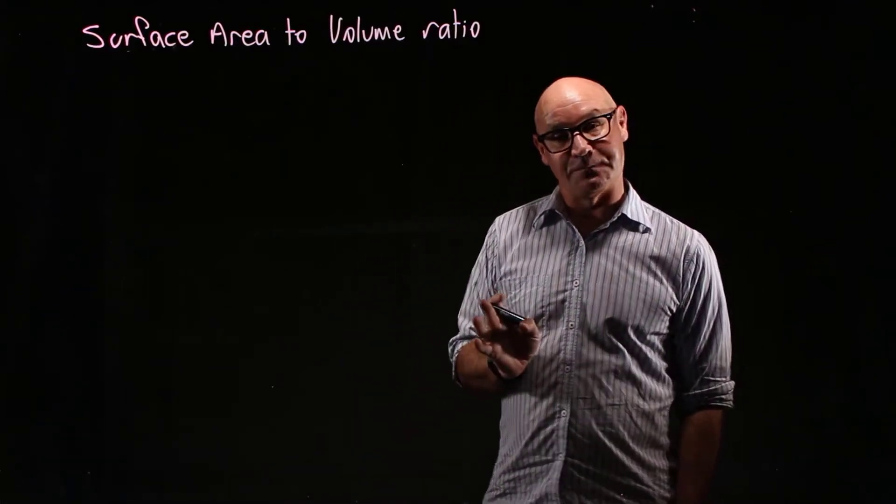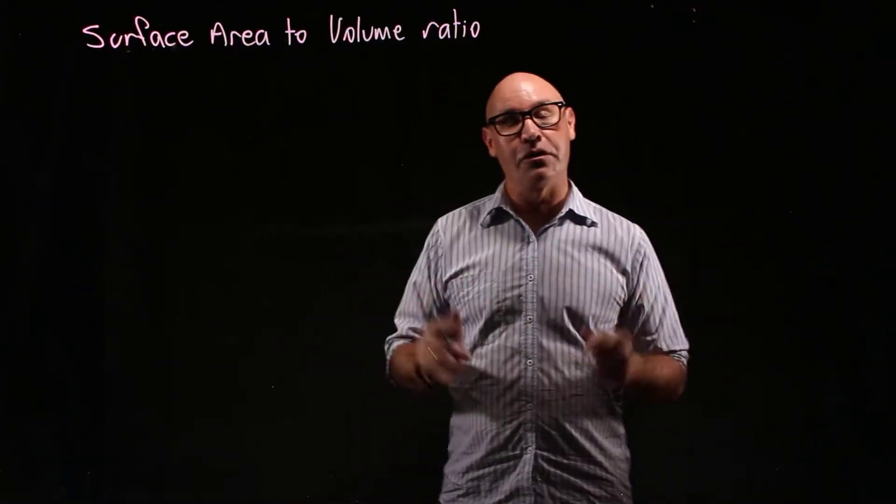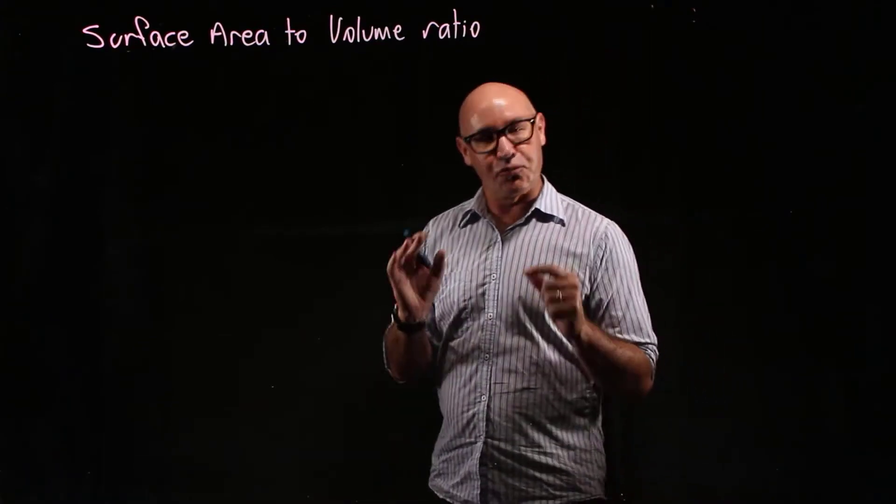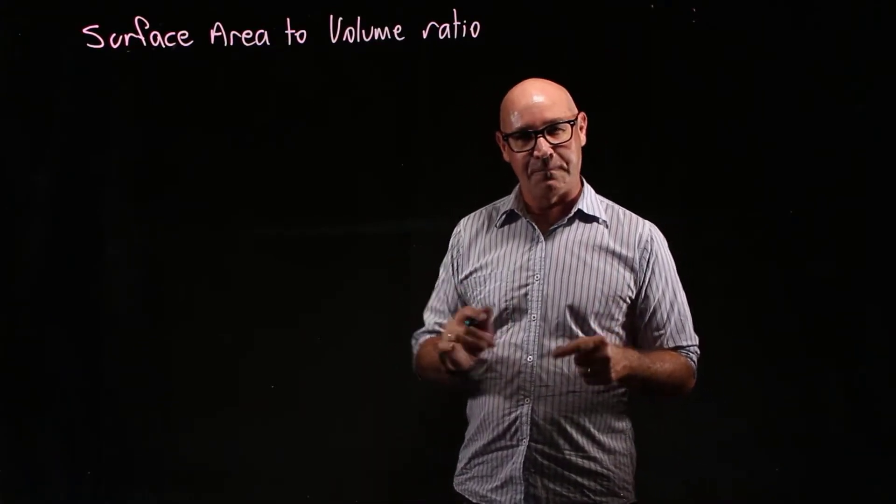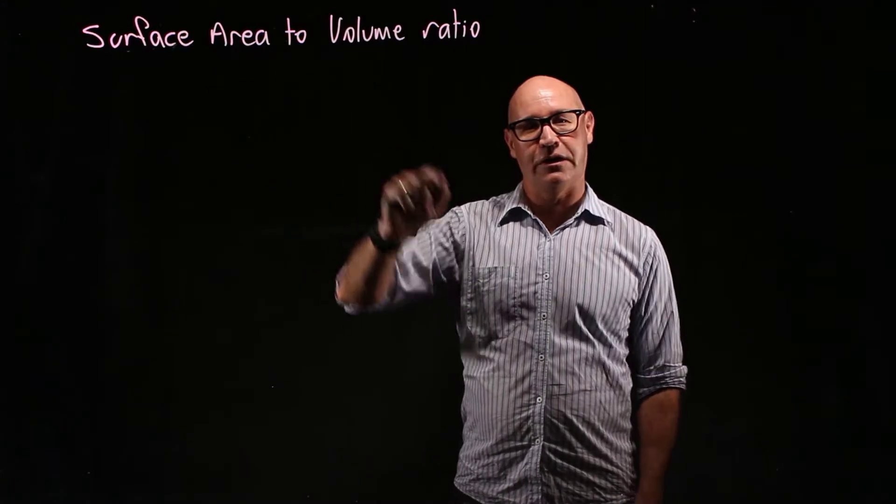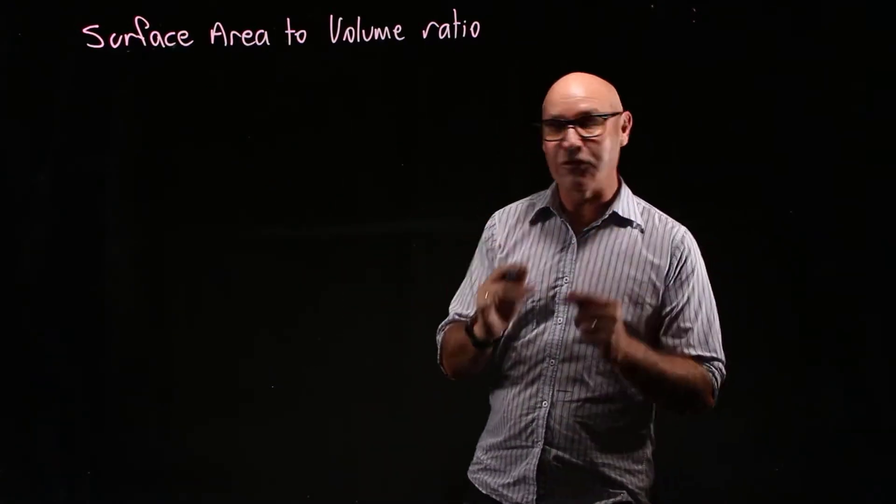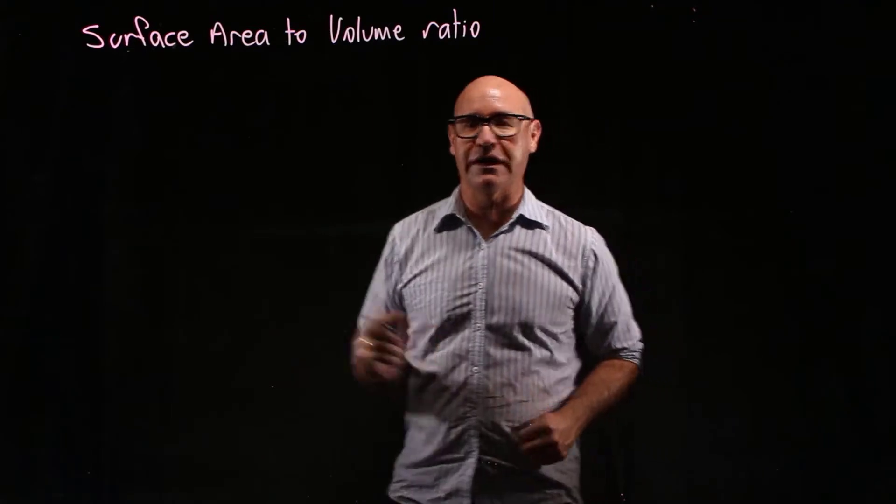Cells are small. I'm probably telling you something you already know, but the reason why cells are small is because of the surface area to volume ratio. So let's have a look at why this is the case.